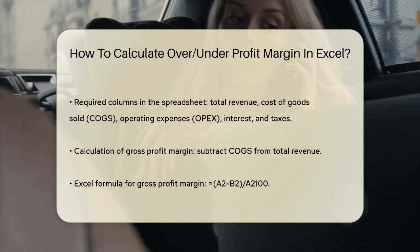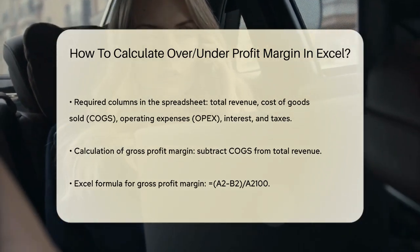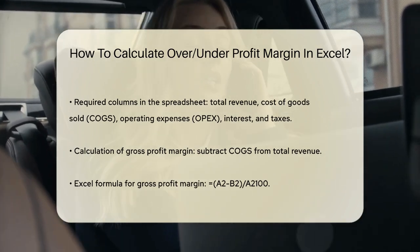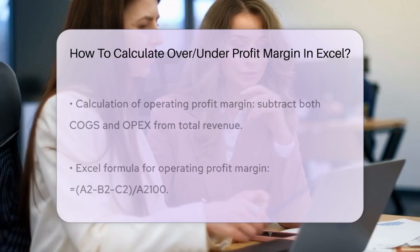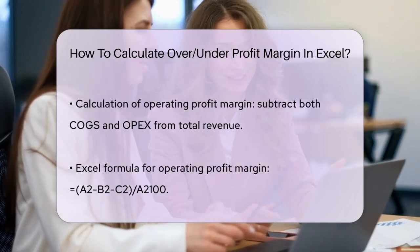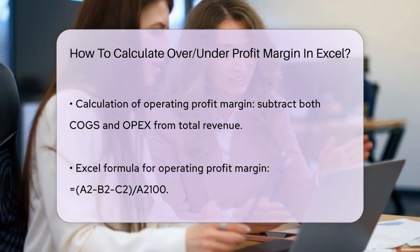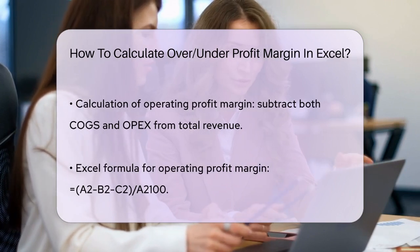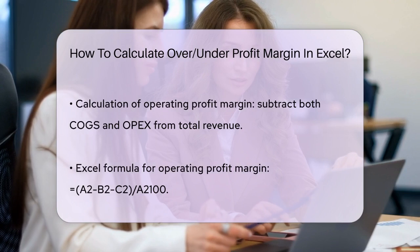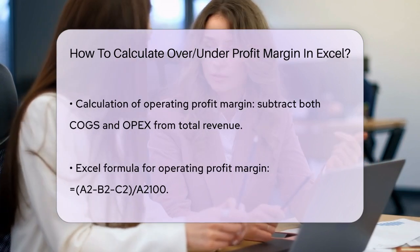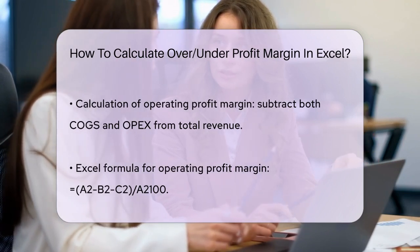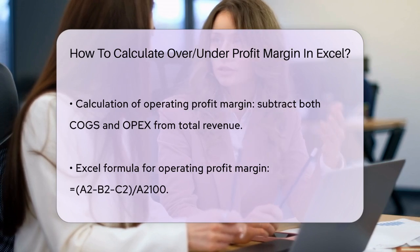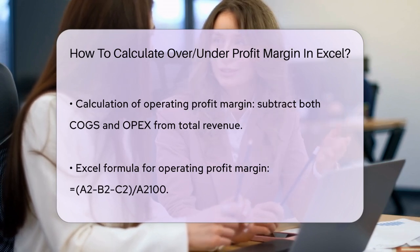Next, for the operating profit margin, you also need to consider your operating expenses. So you subtract both the COGS and OPEX from the total revenue. For example, if your OPEX is $1,000, your operating profit would be $10,000 minus $4,000 minus $1,000, which equals $5,000. Then you divide this operating profit by the total revenue and multiply by 100. In Excel, this formula would be: =(A2-B2-C2)/A2*100, where C2 is the OPEX.